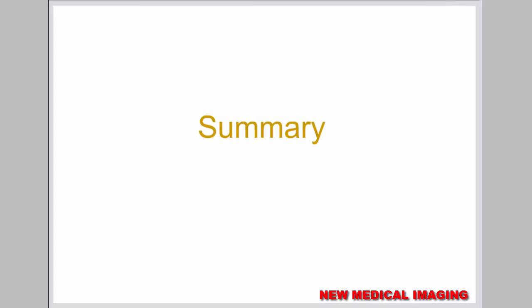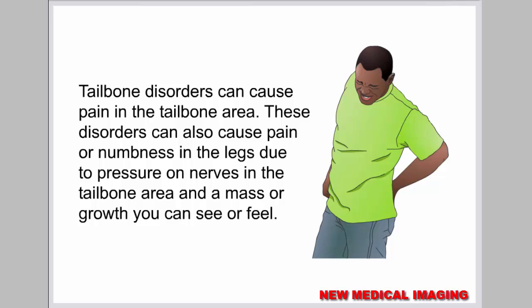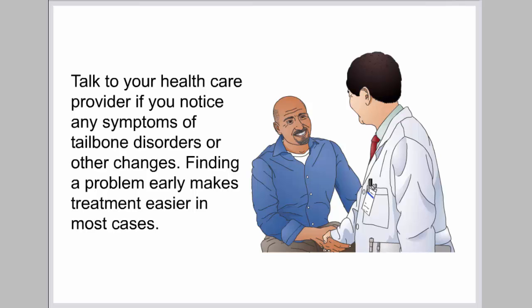The tailbone is the small bone at the bottom of your backbone or spine. Many different disorders can affect the tailbone, including coccydynia, pilonidal cyst, and chordoma. Tailbone disorders can cause pain in the tailbone area, pain or numbness in the legs due to pressure on nerves, and a mass or growth you can see or feel. Treatment for tailbone disorders depends on the cause and may include physical therapy, medication, surgery, or other medical procedures. Talk to your healthcare provider if you notice any symptoms of tailbone disorders or other changes, as finding a problem early makes treatment easier in most cases.